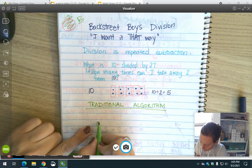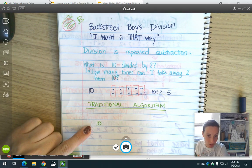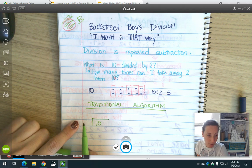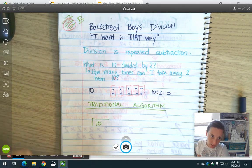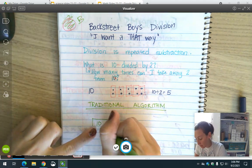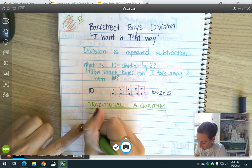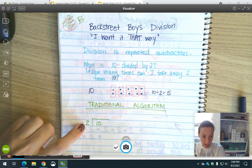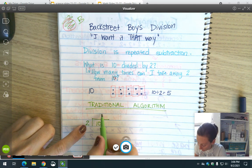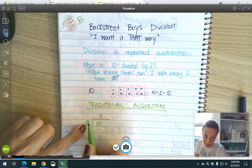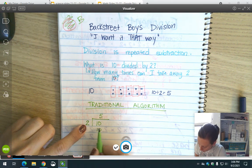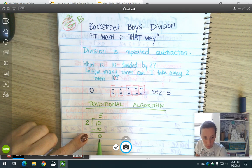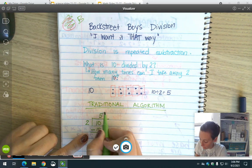We would start with the big number under the house, the number that you're splitting up, and outside we would have the number you're dividing by. So we have the dividend under here and the divisor out here. I would ask myself, how many times does 2 go into 10? 2 goes into 10 five times. 5 times 2 is 10, so I subtract my dividend minus what I just multiplied, which leaves me with 0.